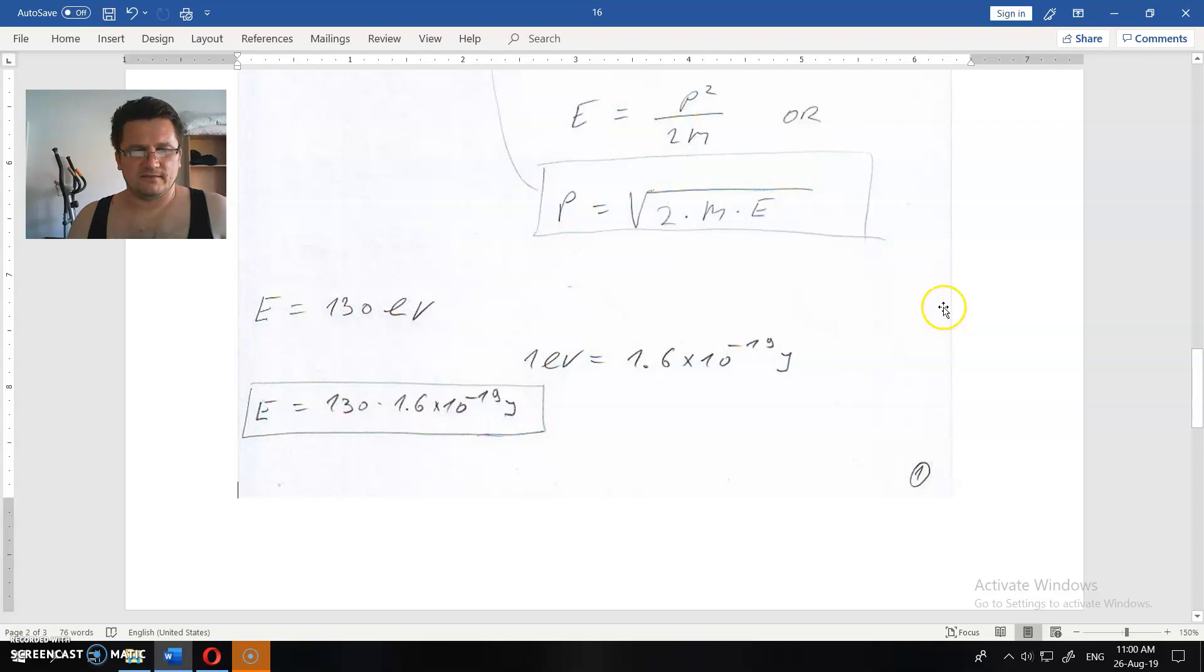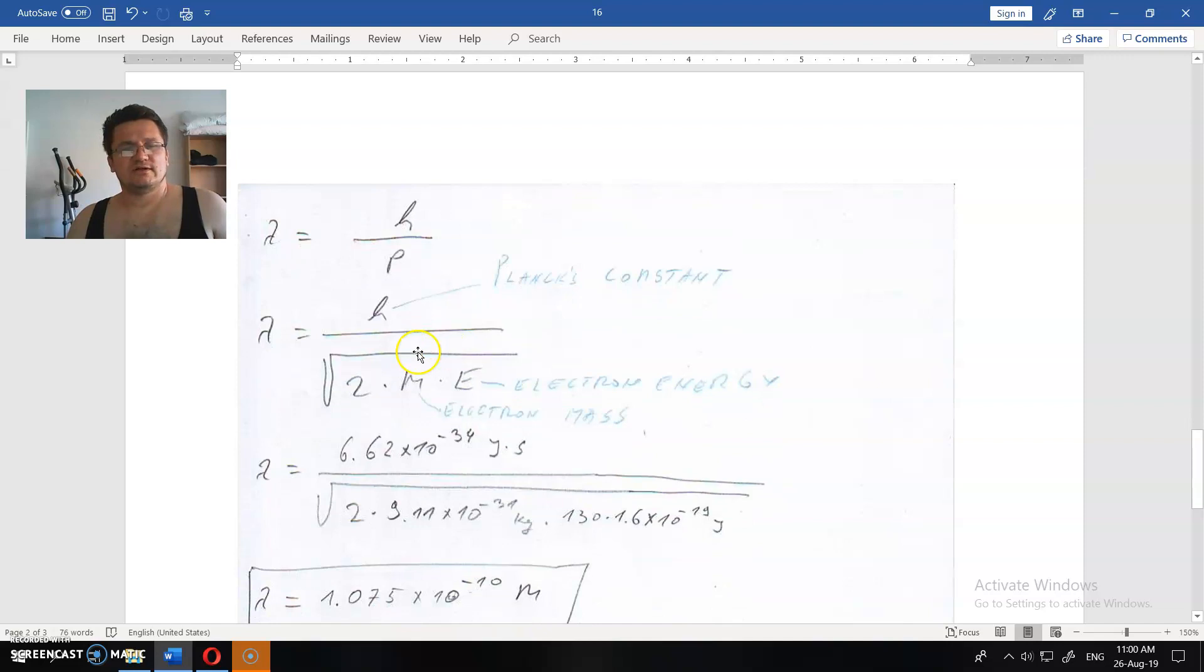So this is the 130 eV in joules. This is the rewritten equation. And this is the wavelength of the electron.